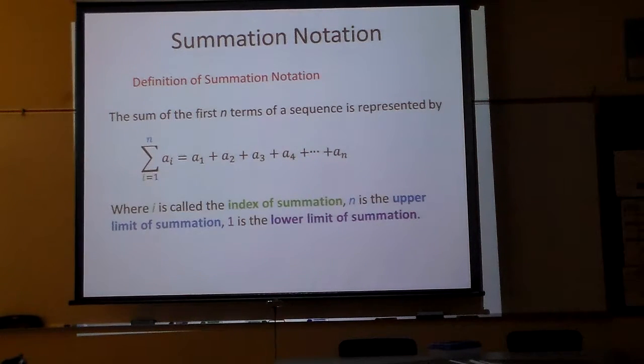So, i is called the index, n is called the upper limit, and this one is also the lower limit of the summation. That's very important.